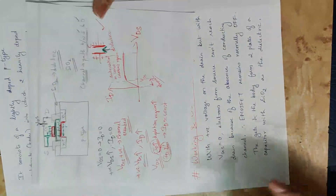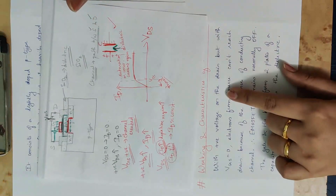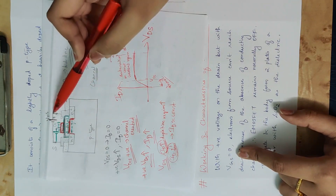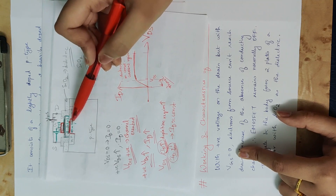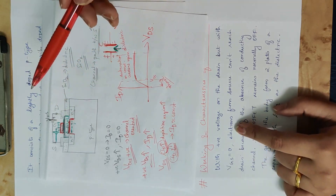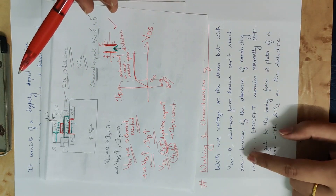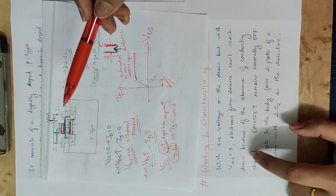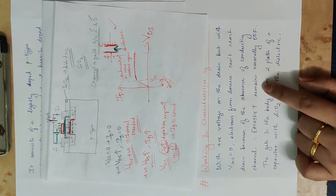Now let's start with positive voltage on the drain but with VGS equal to zero — that is, no gate voltage. The question is: is a channel formed? VGS is zero, so a channel is not formed. The electrons from the source can't reach the drain because of the absence of a conducting channel. Therefore, E-MOSFET remains normally OFF.